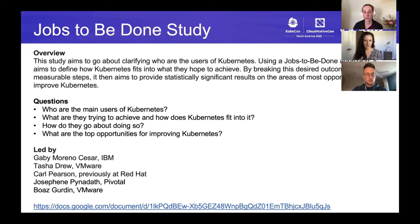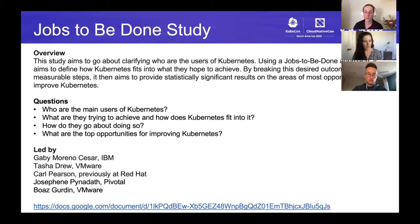The main questions that Jobs to be Done is trying to answer are: who's using Kubernetes, and most importantly, what are they trying to achieve with Kubernetes? What are they trying to do, and what other options did they consider before deciding on Kubernetes? Once they adopt Kubernetes, how do they work towards that objective? Ultimately, we're trying to figure out what are the top opportunities for the open source community to improve Kubernetes. The team includes myself, Tasha, Carl, Josie from Pivotal, and Boaz.